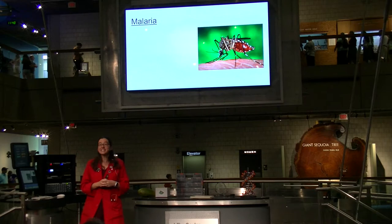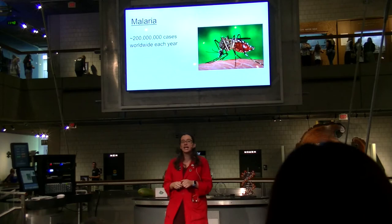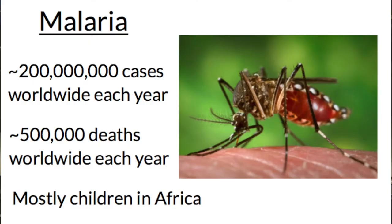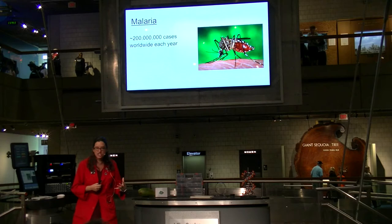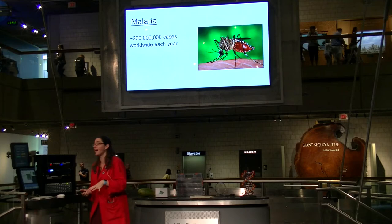Now I want to get into the real-world problem I mentioned, where scientists from all different fields all over the world are trying multiple solutions to mitigate the problem of malaria. There are over 200 million cases of malaria every year, and about half a million people die each year, most of them children under the age of five living in Africa. Chemists, biologists, social workers, and engineers are all trying to work on this particular problem.